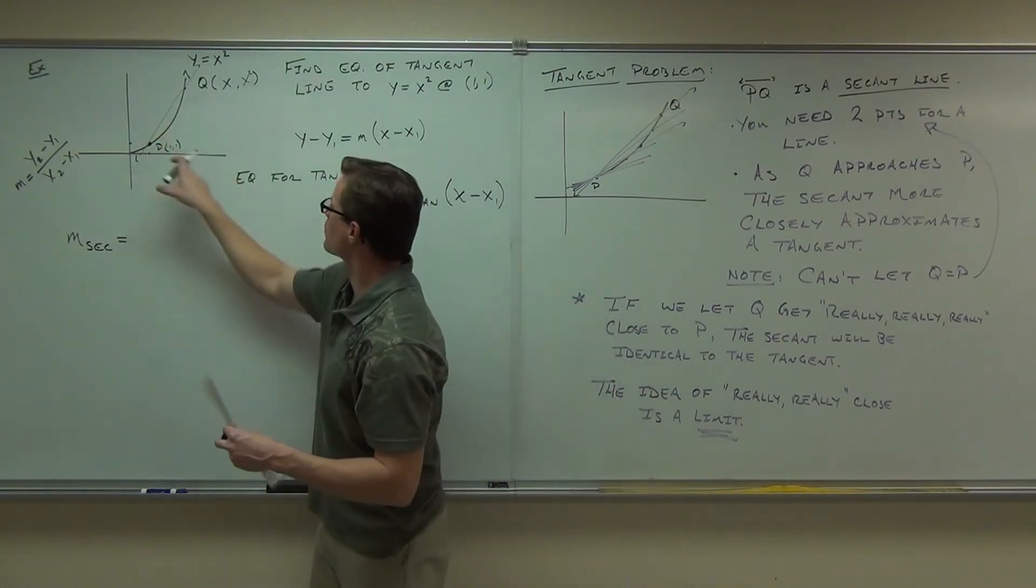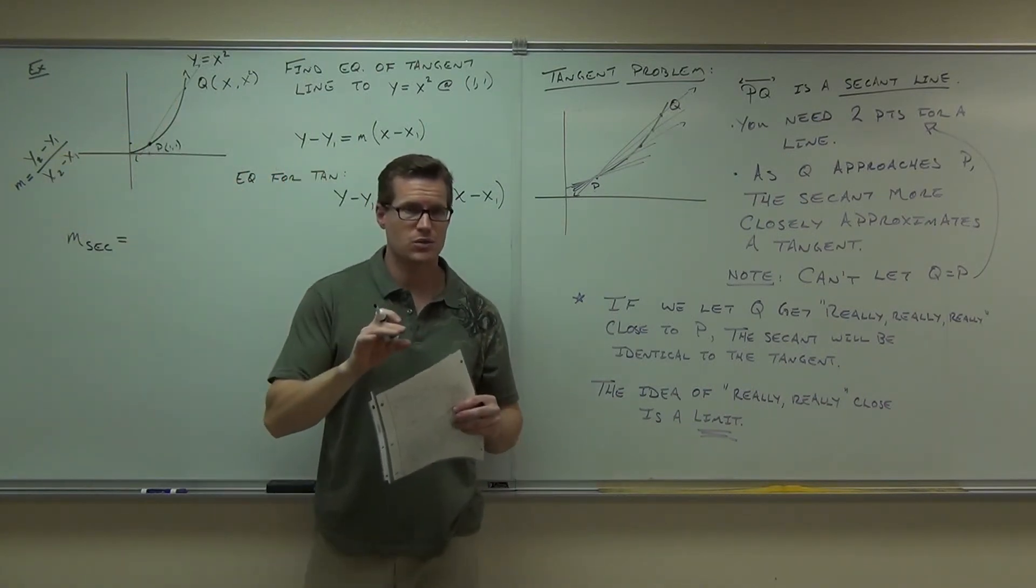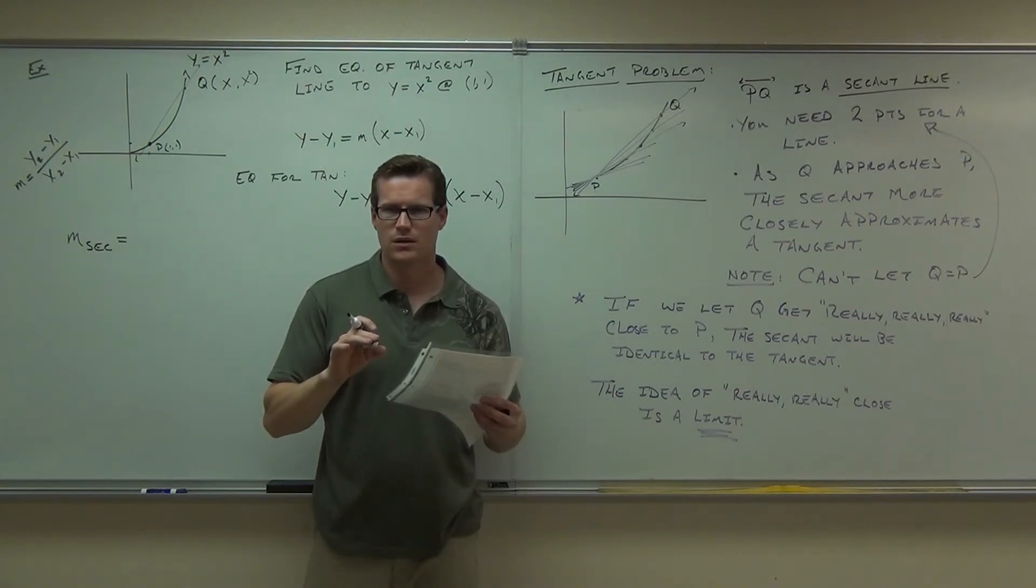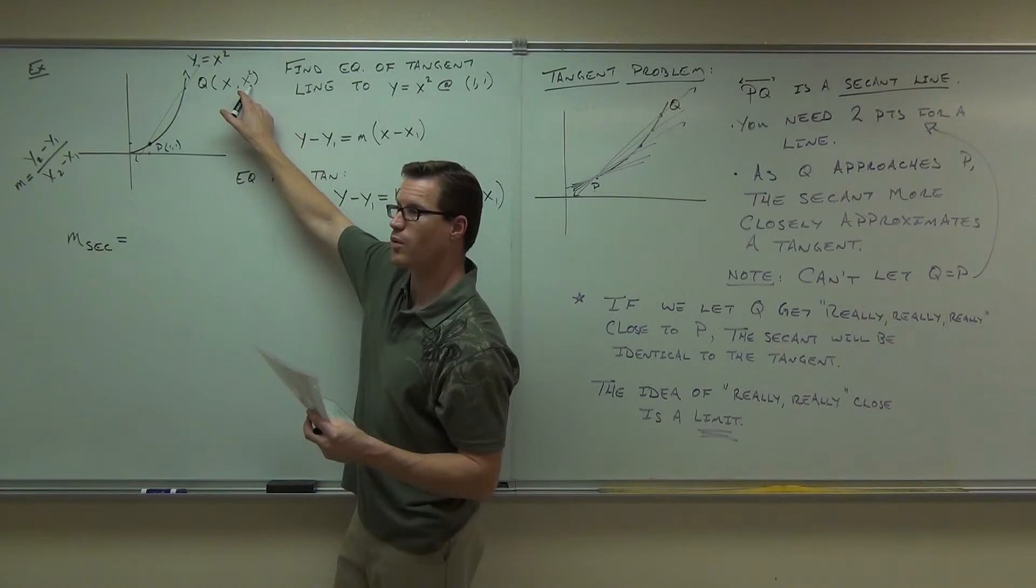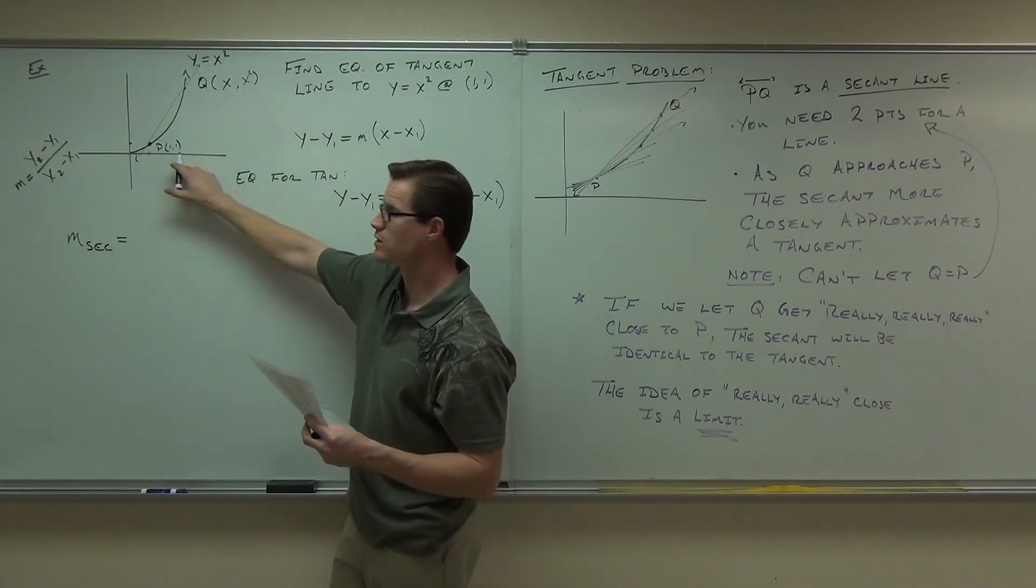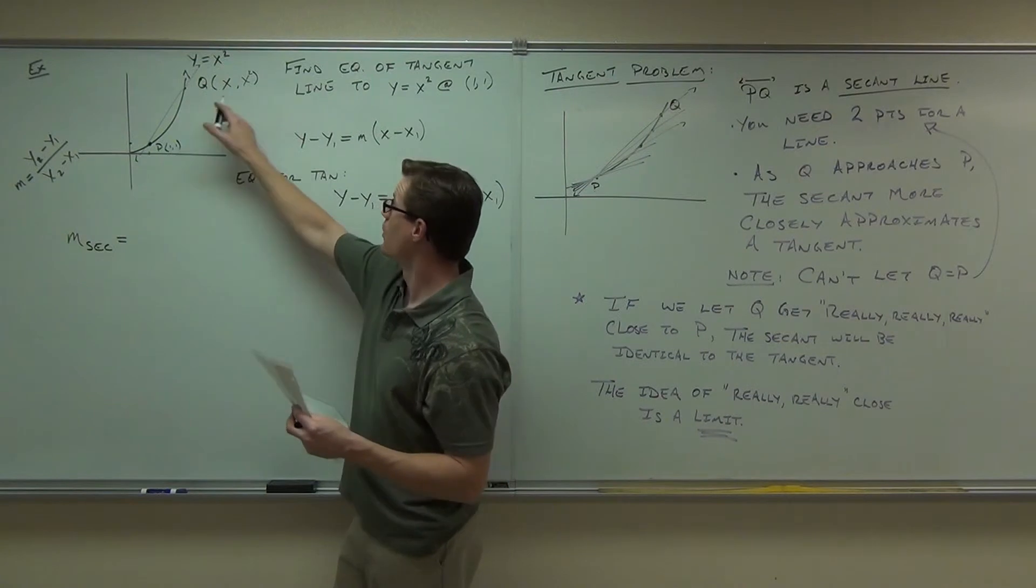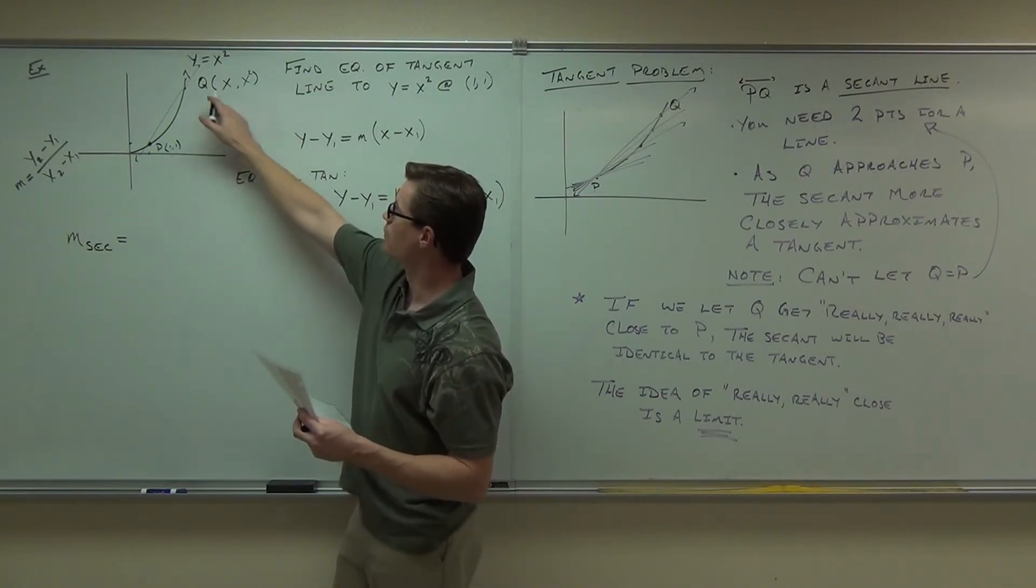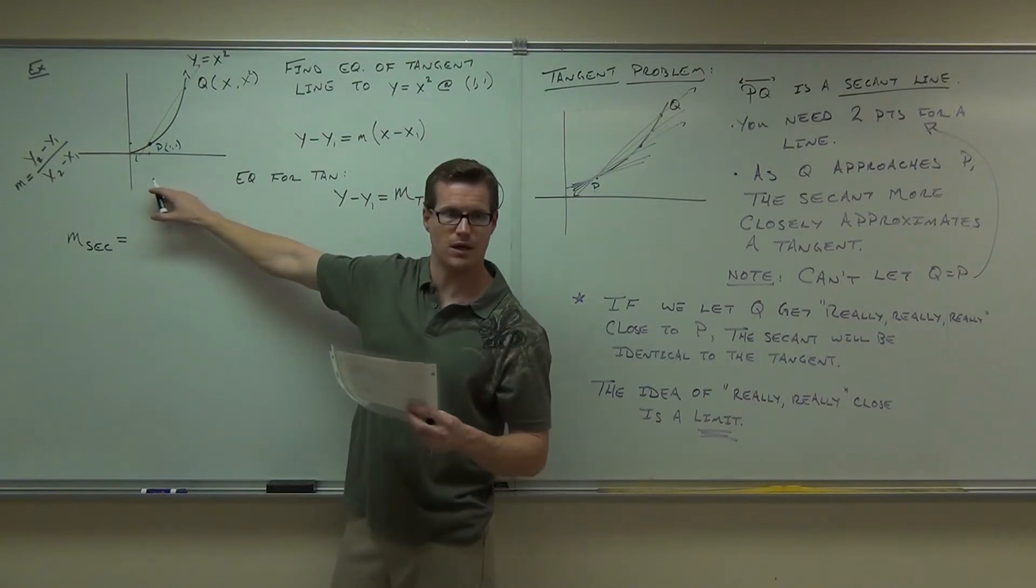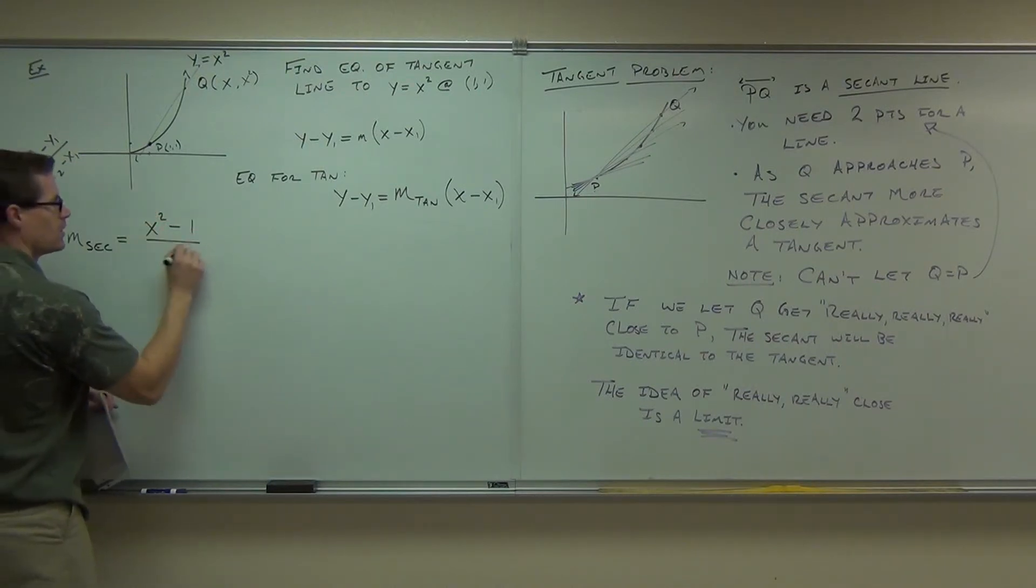Let's plug in these coordinates. We only have them on the board. Plug in these coordinates into that formula. In our case, our y2 is what? X squared. Our y2 would be x squared. What's our y1? One. Not x. One. What's our x2? One. What's our x1? One. Y2 minus y1 over x2 minus x1. So, what we have for the slope of our secant is y2 minus y1 over x2 minus x1.